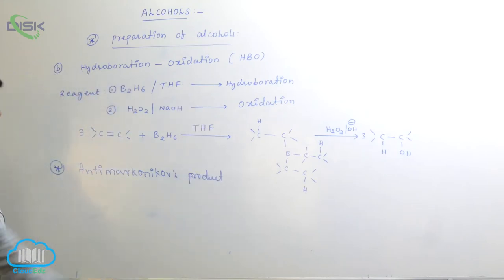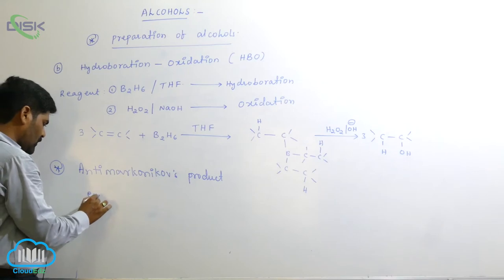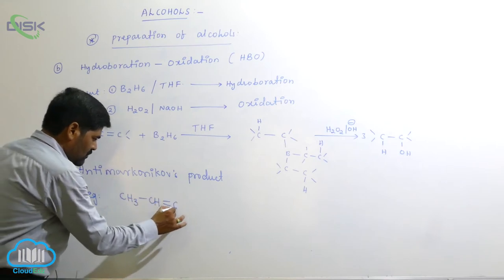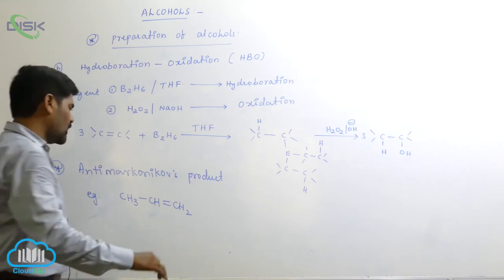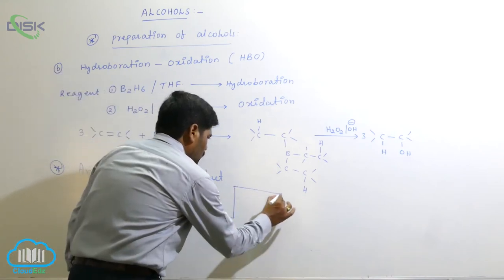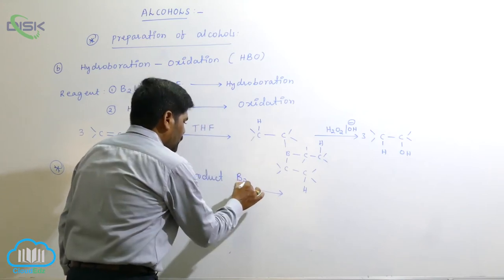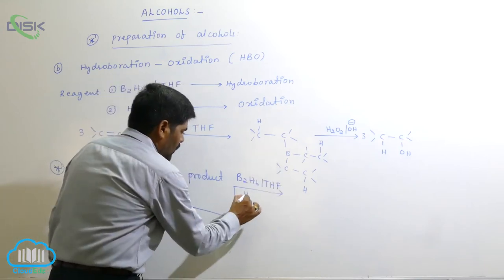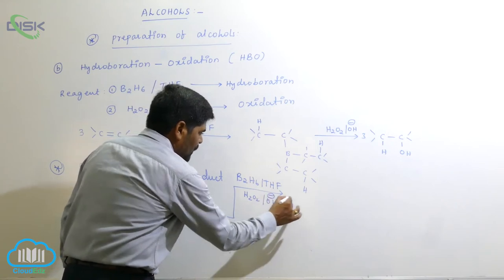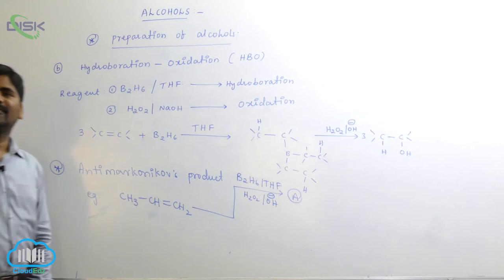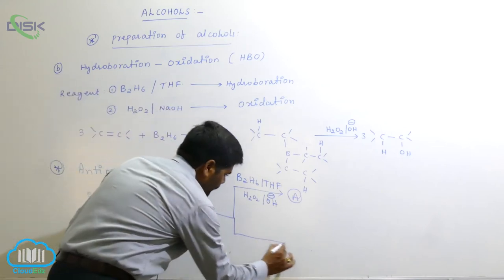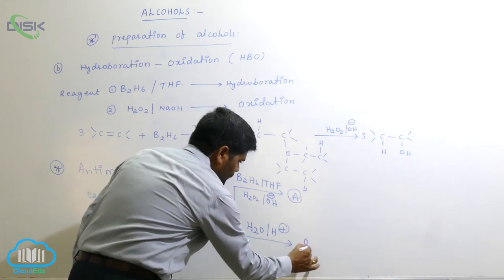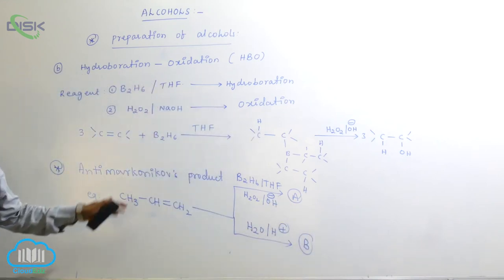Anti-Markovnikov product is formed. For example, if using CH3-CH=CH2 (propene) — if using B2H6 in THF followed by hydrogen peroxide in the presence of base, you get product A. If using H2O in the presence of H⁺, you get product B. What are the products of A and B?